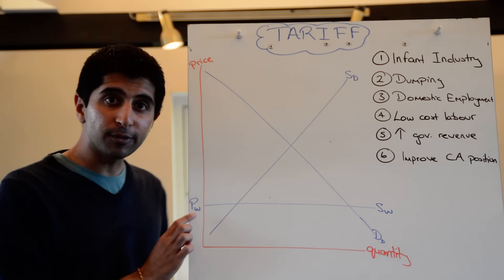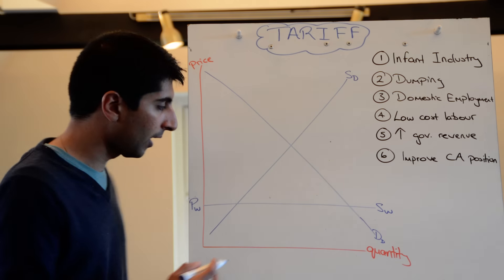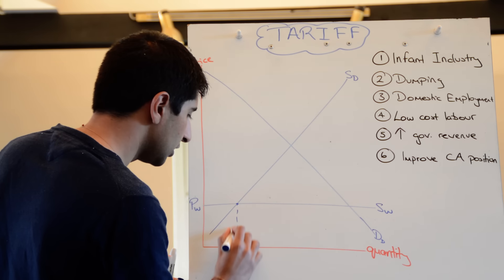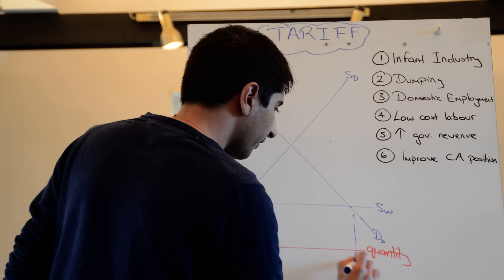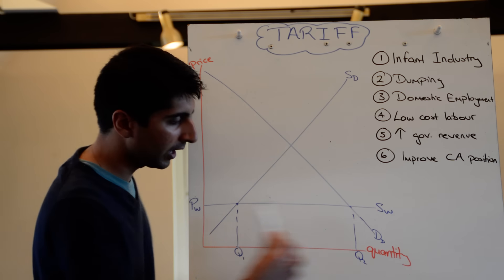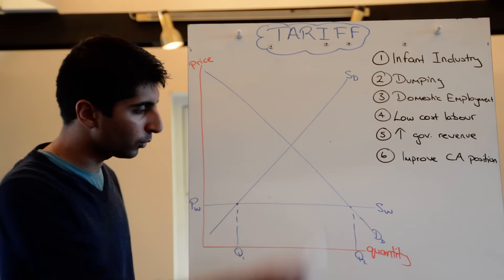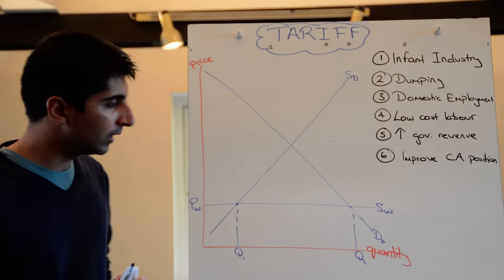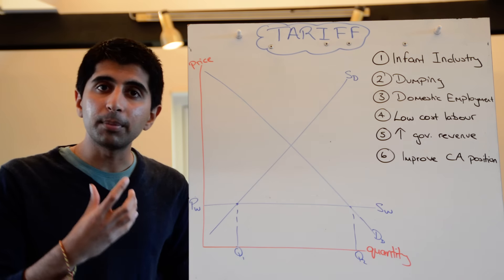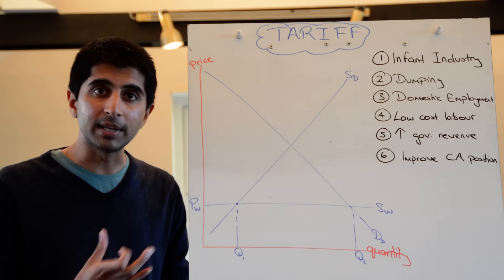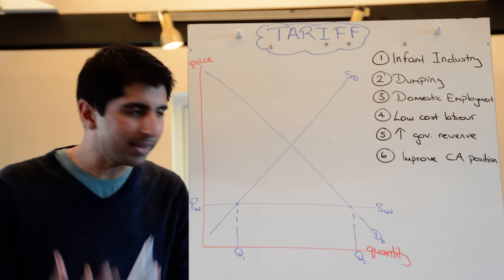So if we take this price, the lower world price, what is the domestic demand? What is the domestic supply? Well, domestic supply is going to be here at Q1 and domestic demand is down there at Q2. So where the world supply, where the price here cuts the domestic supply and demand curve is where you find those two quantities. So you can see there is an issue here. Q1 is being supplied domestically at this low price of PW, but Q2 is demanded. There is an excess demand, right? Big excess demand.